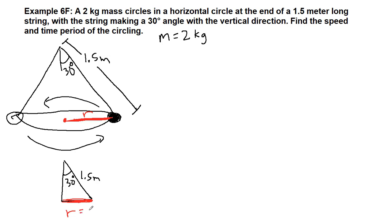So the radius is 1.5 sine of 30 degrees, which is equal to 0.75 meters. We can add that to our list of given information: r equals 0.75 meters.